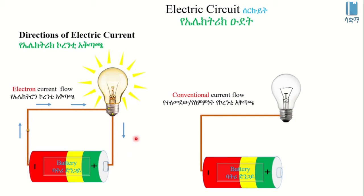This is what we call conventional current flow. We call it conventional current flow from positive to negative terminal. We call it positive terminal to negative terminal.